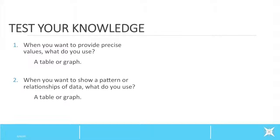Now, let's test your knowledge. When you want to provide precise values, what do you use? A table or a graph? The answer is table. When you want to show a pattern or relationships of data, what do you use? A table or a graph? The answer is a graph. Fantastic!